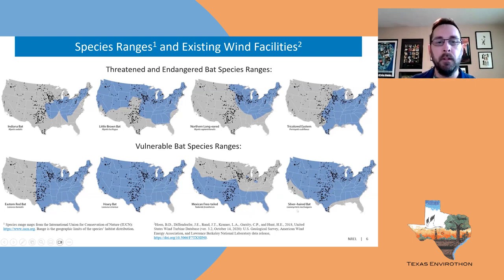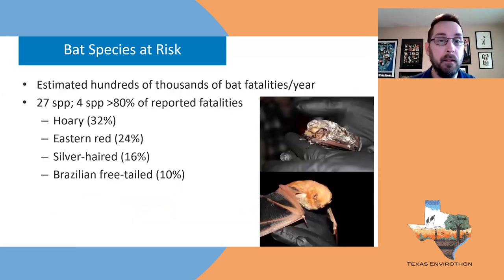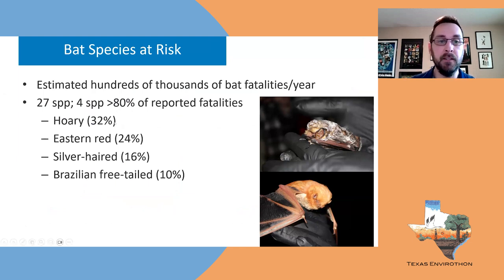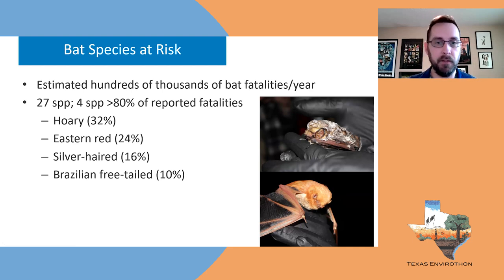Estimated fatalities for those four vulnerable bat species are in the hundreds of thousands per year. We've found a total of 27 different bat species killed under wind turbines, but those four make up 80 percent of fatalities. The hoary bat makes up about 32 percent, the eastern red bat 24 percent, the silver-haired bat 16 percent, and the Brazilian free-tailed bat 10 percent.